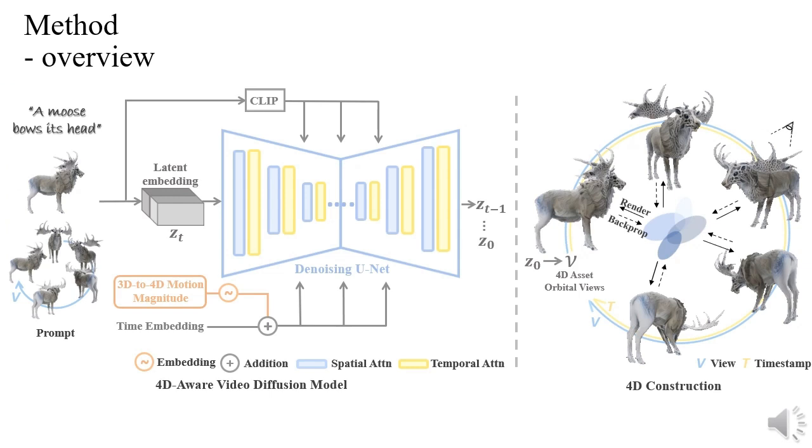This framework is composed of two stages: the development of 4D-aware video diffusion model, aiming at generating orbital views of 4D assets, and explicit 4D construction with Gaussian splatting representations. To the best of our knowledge, this is the first endeavor to adapt a video diffusion model and train on a 4D dataset for explicit novel view synthesis of 4D assets. We will introduce each part one by one.